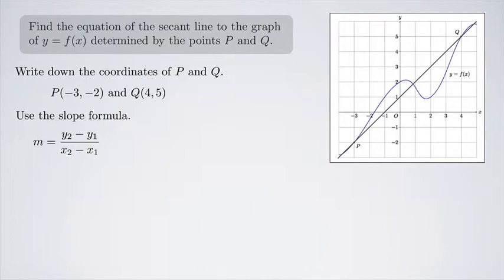I'm going to choose point P to be x1 comma y1 and point Q to be x2 comma y2. So when I plug in, I get 5 minus negative 2 divided by 4 minus negative 3. And that's just 7 over 7 or 1.